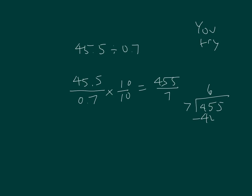6, 42, 35 divided by 7 is 5. 5 times 7 is 35, and 35 minus 35 is 0. Equals 65.